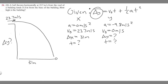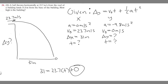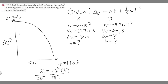Plugging into the x equation: 31 equals 23.7 times t, plus one-half times zero times t-squared. The second term becomes zero since acceleration in x is zero. Dividing both sides by 23.7, we get t equals 31 divided by 23.7, which gives t equals 1.308 seconds. This same time applies to the y direction.